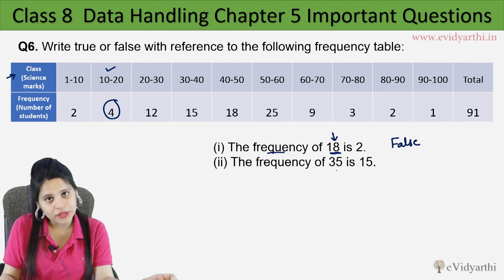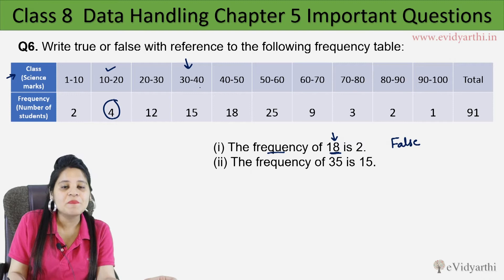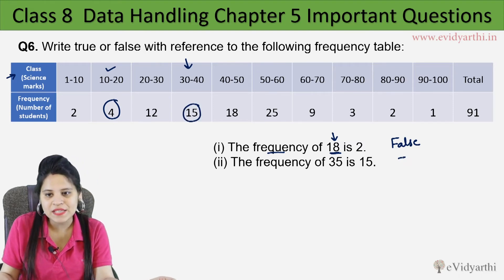Then the frequency of 35 is 15. Where do we put 35? 30 to 40, which means the frequency is 15. Which means this is true.